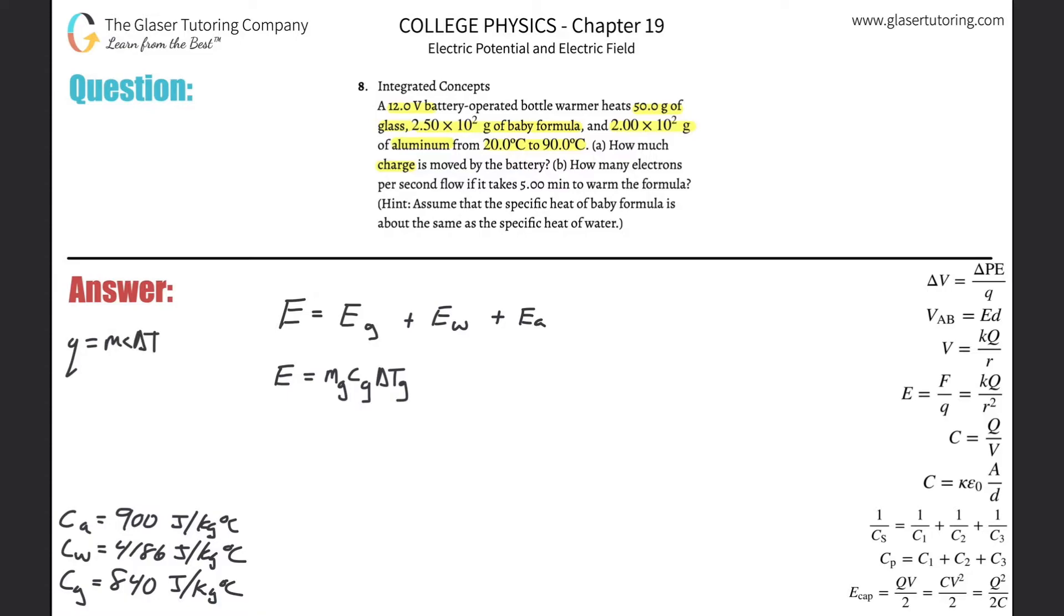Same thing for the water, the mass of the water, specific heat of the water, the change in temperature of the water, plus then the mass of the aluminum, specific heat of the aluminum, and then times the change in temperature of the aluminum. Now the change in temperatures are going to be the same for each, I could factor that. The change in temperature is constant amongst all of them because they're all going from 20 to 90. So mathematically, I can take that out of each term.